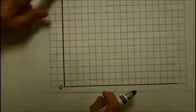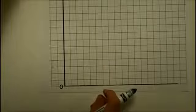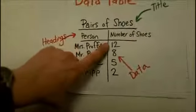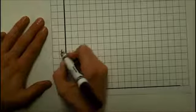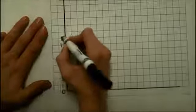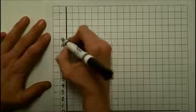13, 14, 15, 16. Well, if you look back at my data, my biggest amount of shoes was 12. So, 16 will definitely be fine. So, I'm going to go ahead and count by 1s. I'm going to notice that I'm putting the numbers on the lines.